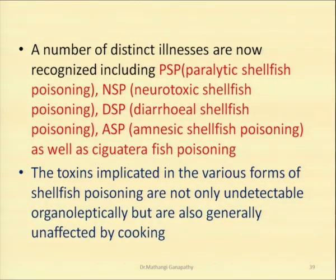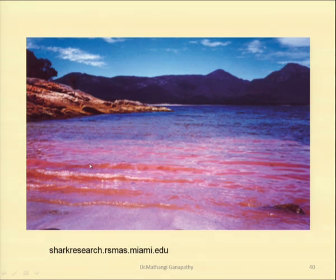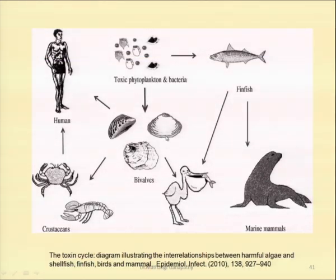The presence of the toxin in the shellfish does not give them any off-flavor, so by a change in taste or flavor we cannot detect that the food has been contaminated. Second, even if you cook them properly — well-processed, well-cooked food — it will still contain these algal toxins. They do not get degraded by cooking. This picture shows a red algal bloom, which in turn causes a type of shellfish poisoning. The toxic phytoplankton and bacteria are at the lowest level in the food chain.